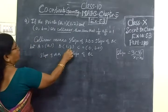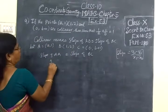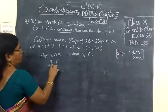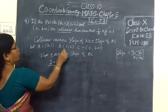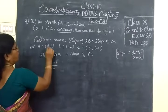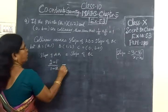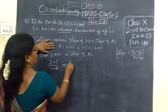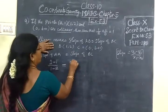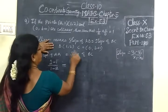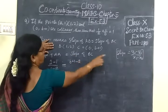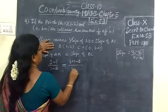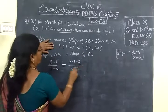Slope of AB: Y2 is 2 minus Y1, 1, in the formula. X2, 1 minus X1, A. Equal to, now take B and C: Y2 is B+1 minus Y1, 2. Y2 minus Y1 by X2, 0 minus X1, 1.